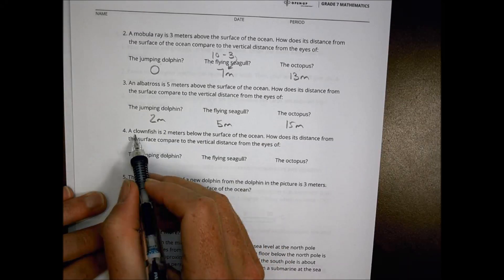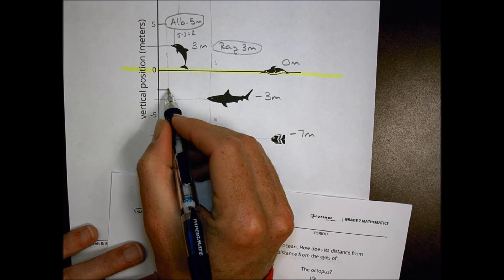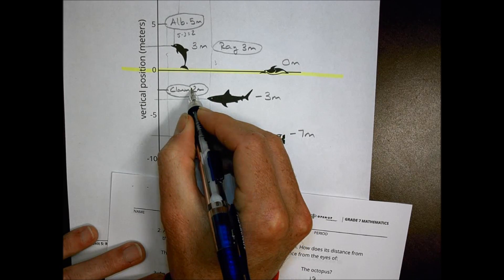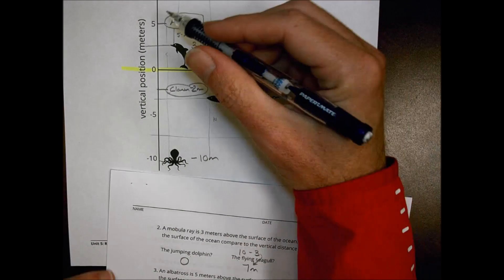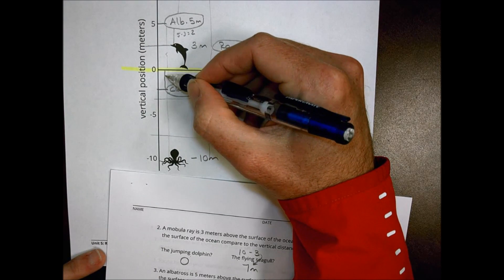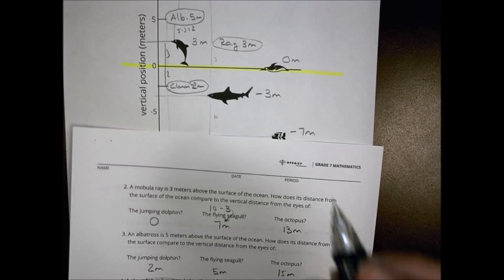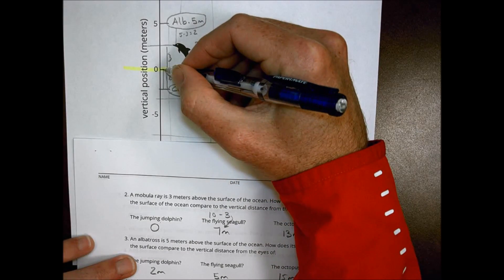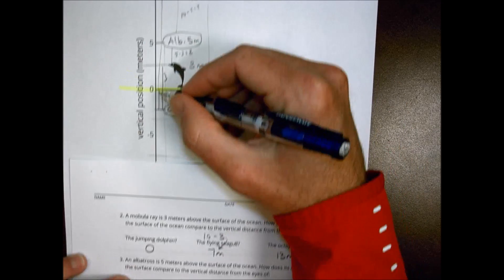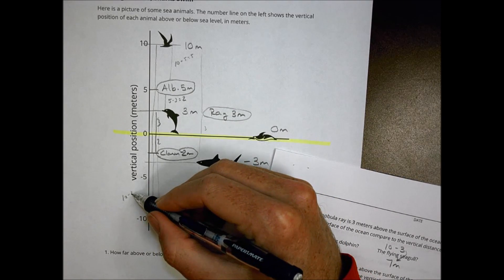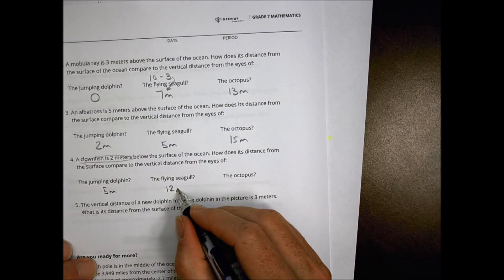A clownfish is 2 meters below the surface of the ocean, so its position is negative 2. Looking for how far it is from the dolphin at 3: we go up 2 and then up another 3, so 2 plus 3 equals 5 meters. For the seagull at 10: 2 plus 10 equals 12 meters. For the octopus at negative 10: the distance is 10 minus 2, which equals 8 meters.